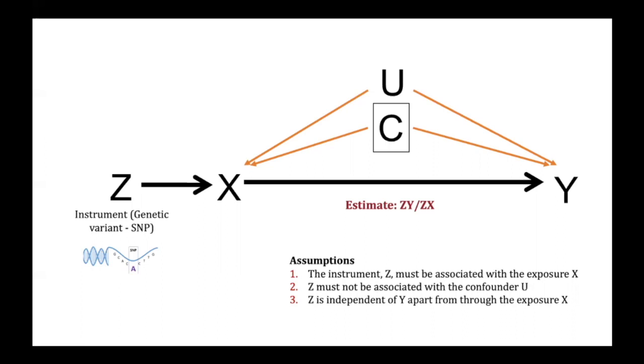The actual estimate for MR for the causal effect is obtained through calculating a Wald ratio, where the SNP outcome, so the ZY estimate, is divided by the SNP exposure, so the ZX relationship. This ratio forms the basis of all MR approaches, which is important to note that there are multiple MR approaches such as MR-Egger or the inverse variance weighted method, which each relax these assumptions to various extents so that we can increase our confidence by triangulating across them.